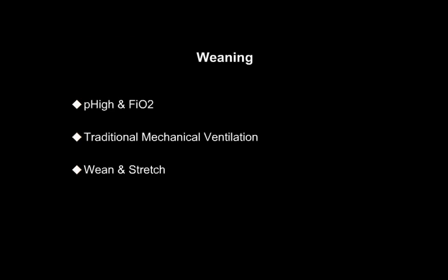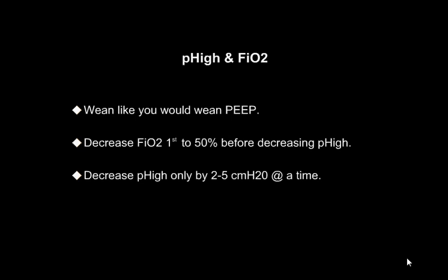Weaning. Weaning the P-high and FiO2. When the patient is starting to look better and you want to decrease the settings, you would wean P-high like you would wean PEEP — only by a couple centimeters of water at a time, evaluating the patient's oxygenation status and hemodynamics. Decrease the FiO2 first to 50 percent before decreasing P-high, and decrease P-high only by two to five centimeters of water at a time.